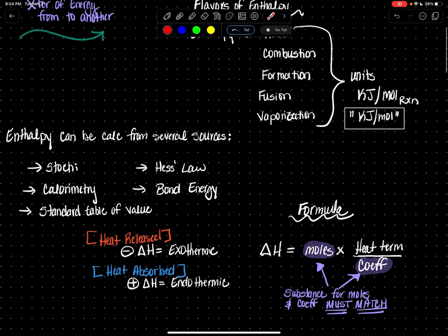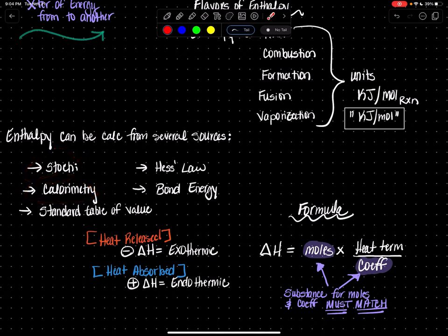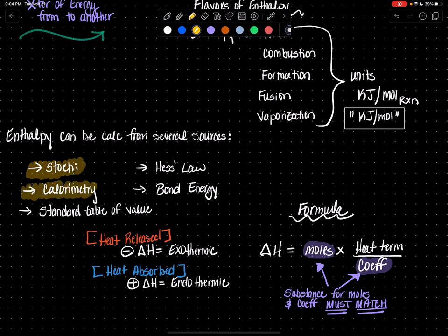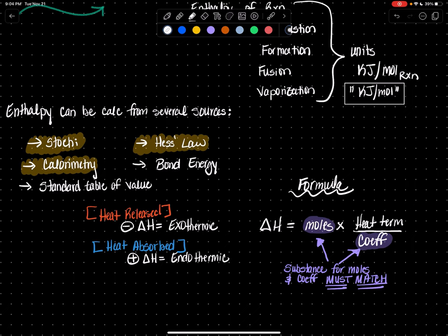You can talk about enthalpy from several sources — from stoichiometry to calorimetry, from a standard table of values, Hess's law, or you can pull up the bond energies. However, in this classroom we're going to talk about it in three different perspectives using stoichiometry. We'll learn about calorimetry later, and we're going to talk about it from the perspective of Hess's law within this unit. But right now let's stick to the basics — the easiest way is from stoichiometry.